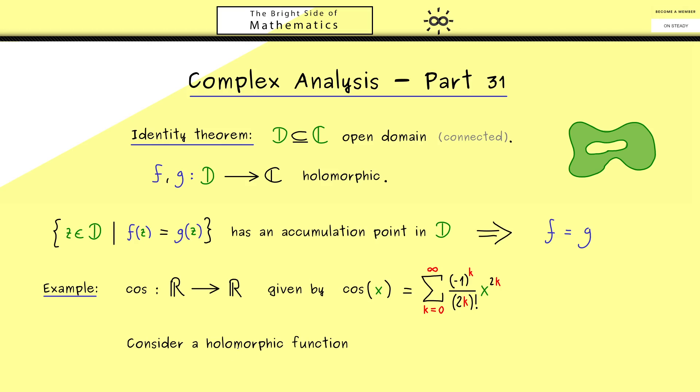However, now let's consider a holomorphic function g defined on an open domain D, where in addition we also have that D has real numbers. So the intersection with the real number line should be non-empty.